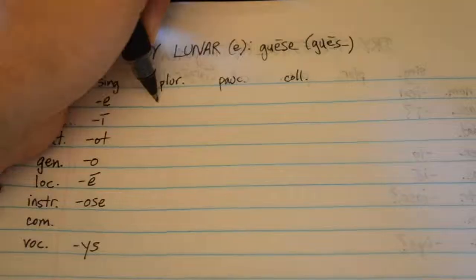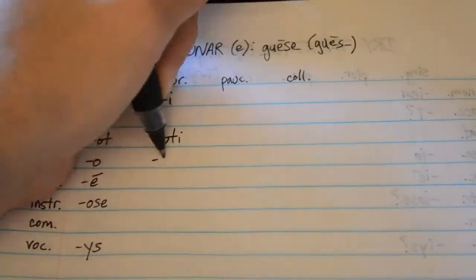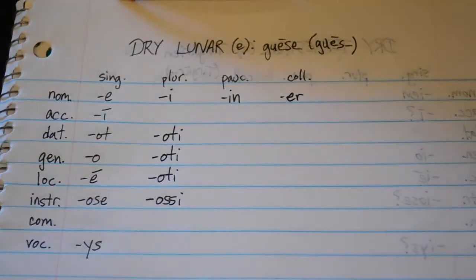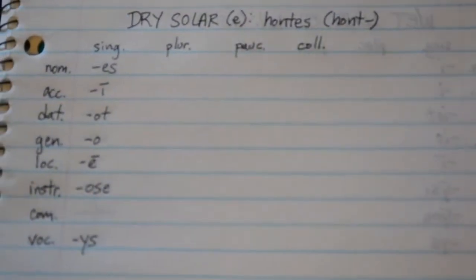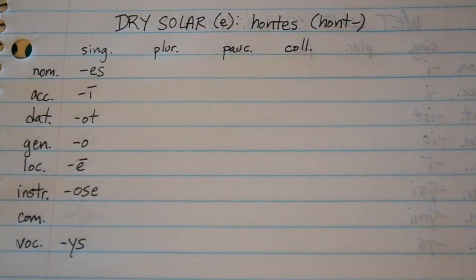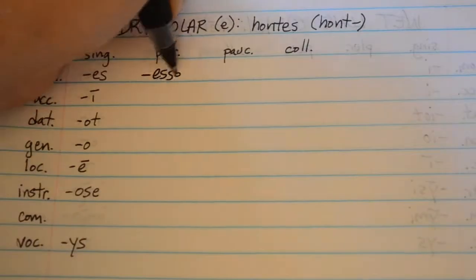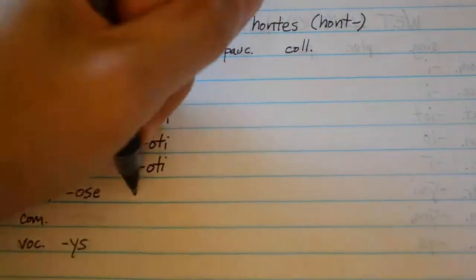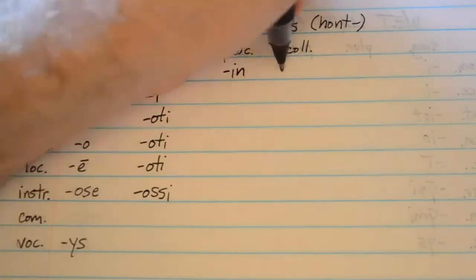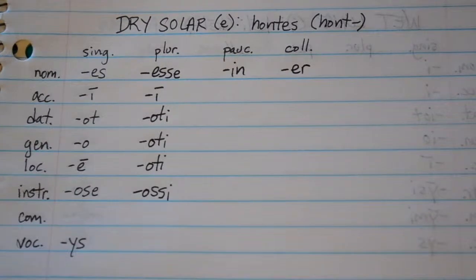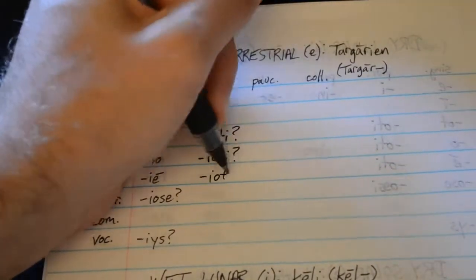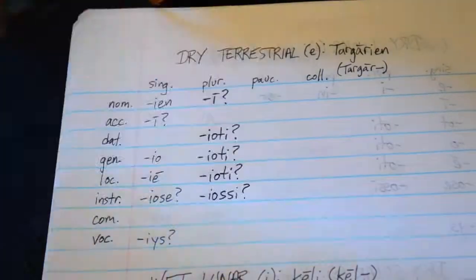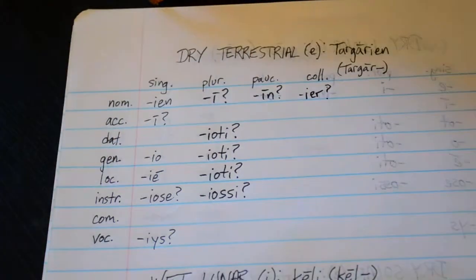On to Dry. Dry, the E-stem, is something of an enigma. We just haven't had enough examples of Dry nouns in more complicated sentences to understand what to expect. A lot of these endings are based on educated guesses and an understanding of the way the rest of Valyrian works — especially in the terrestrial gender, since Dani doesn't talk about her family much.